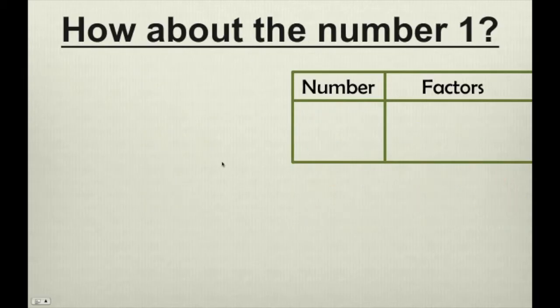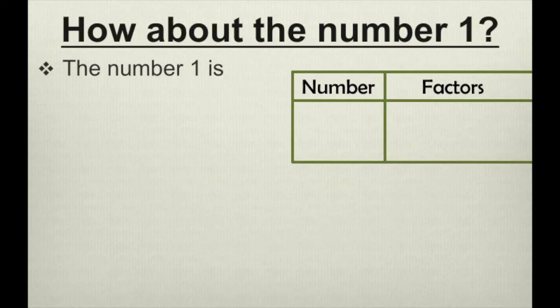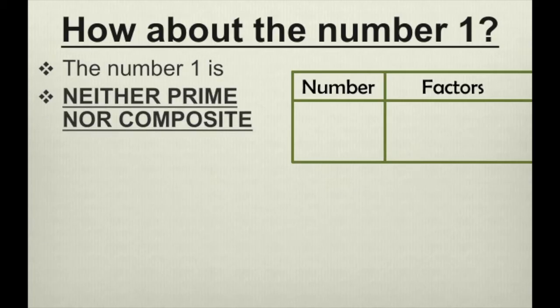However, how about the number 1? This is something that my students ask me all the time. What does that make 1? That means 1 has to be prime. Technically, no. 1 is not prime. The number 1 is neither prime nor composite.